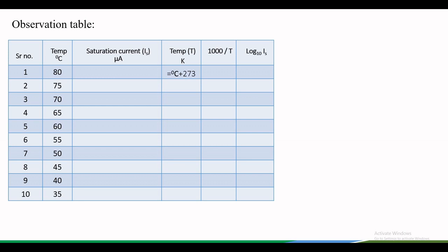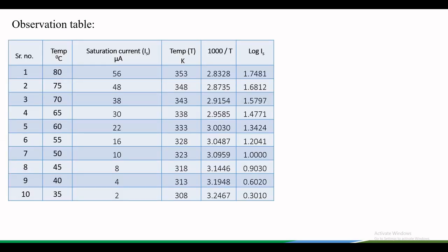As can be seen in this observation table, we have recorded the saturation current values in steps of 5 degree Celsius. In the next column, the values of temperature in Kelvin need to be inserted by adding 273 in each value of temperature in degree Celsius. Next, we divide 1000 by this value of temperature in Kelvin and take log of saturation current value. So you get an observation table something like this.